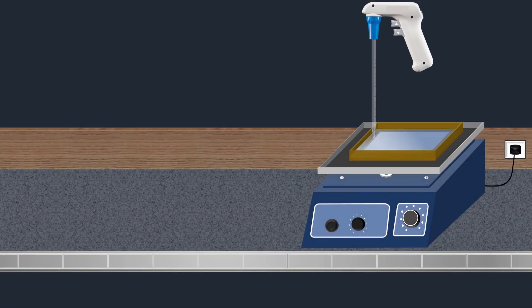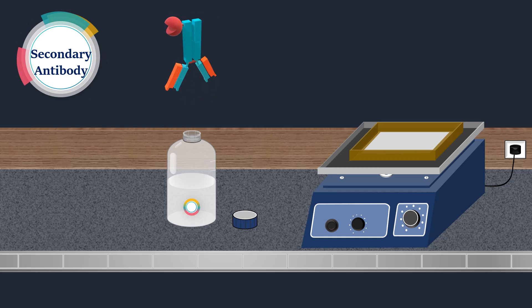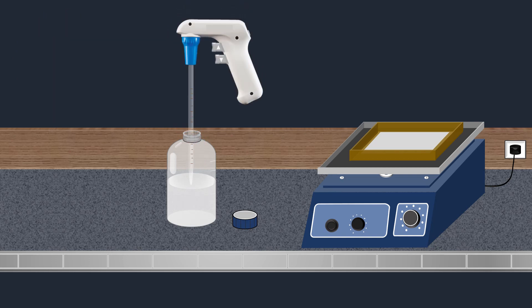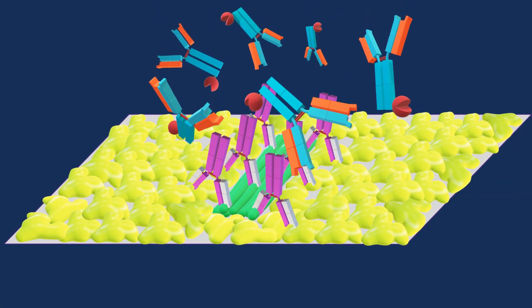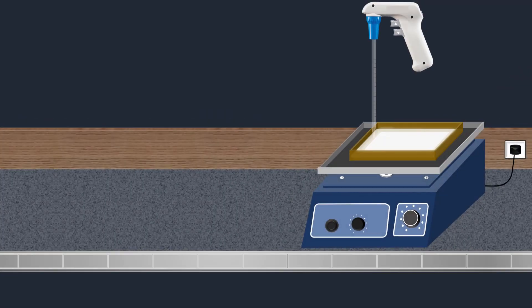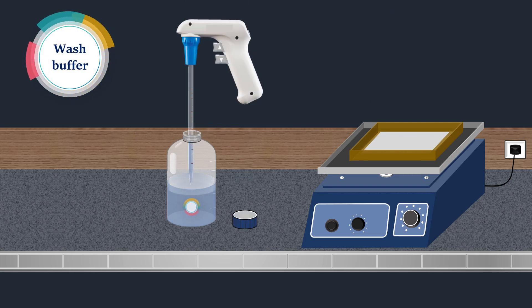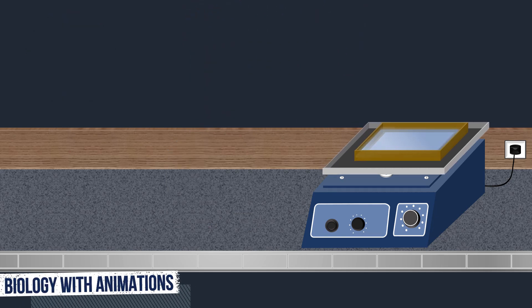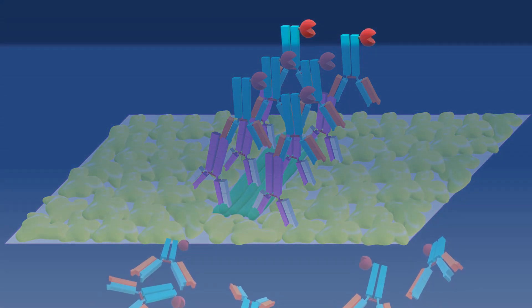After washing the membrane, the wash buffer is removed. A solution containing the secondary antibody is added into the tank, and the membrane is incubated under gentle agitation. The secondary antibody recognizes and binds to a specific portion of the primary antibody. Following incubation, the secondary antibody solution is removed, wash buffer is poured into the tank, and the membrane is incubated on the rocking platform. The membrane is washed several times to remove unbound secondary antibodies — it is crucial to thoroughly wash the membrane at this step.